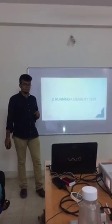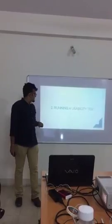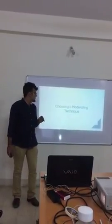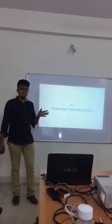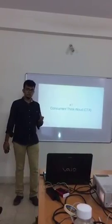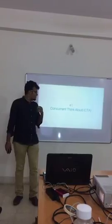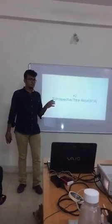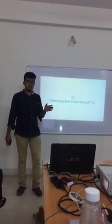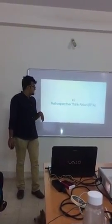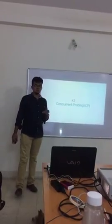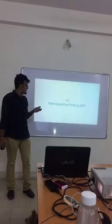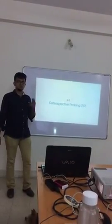The second step is to run the usability test. There are four moderating conditions prescribed by the usability testing community. First is concurrent think-aloud — participants are allowed to speak while using the product and can call out their thoughts directly to the observer. Second is retrospective think-aloud — feedback is collected after the test is over, asking the person to reflect on the actions they did. Third is concurrent probing — the observer is free to ask questions to the participant while they are doing something noteworthy. Fourth is retrospective probing — the observer takes notes and asks questions after the test is completely over.